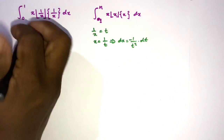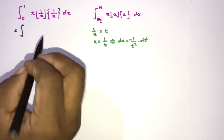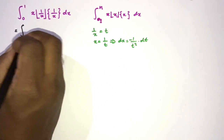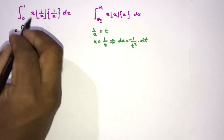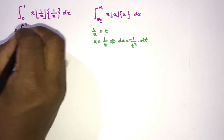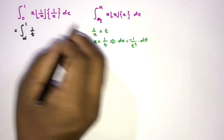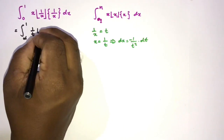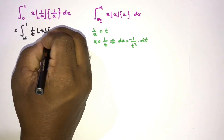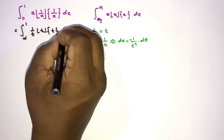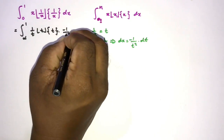Now we can plug in. For the limits: when x approaches 0, t approaches infinity; when x approaches 1, t equals 1. So x becomes 1/t, and 1/x becomes t, giving ln(t). And the fractional part of 1/x becomes the fractional part of t, with dx = -1/t² dt.